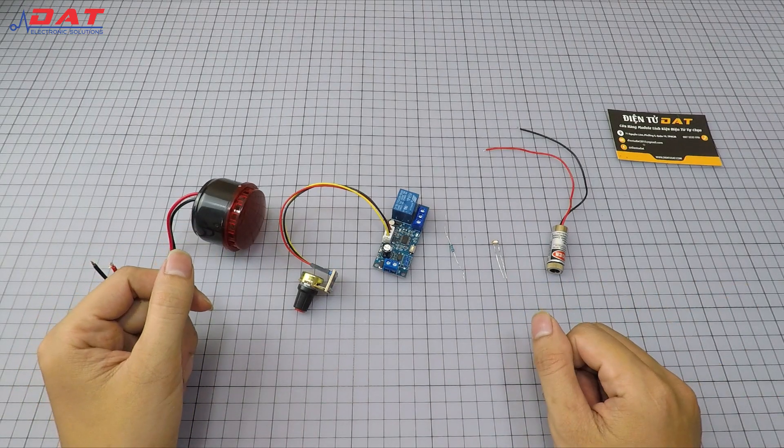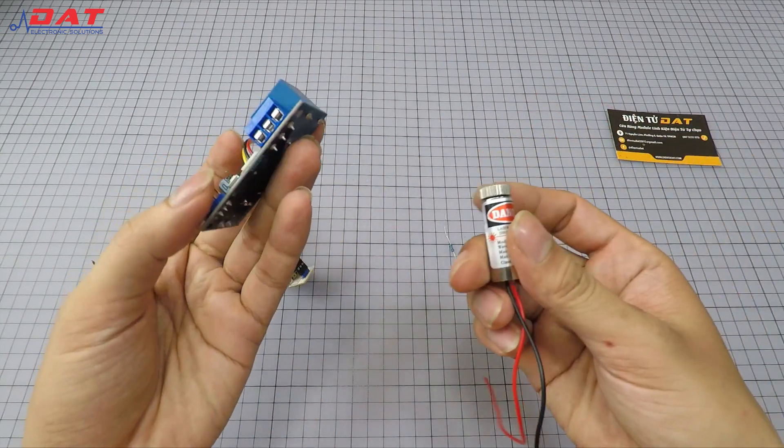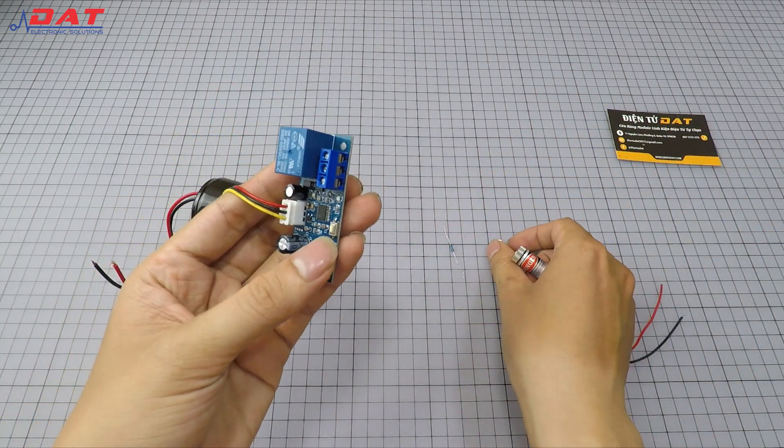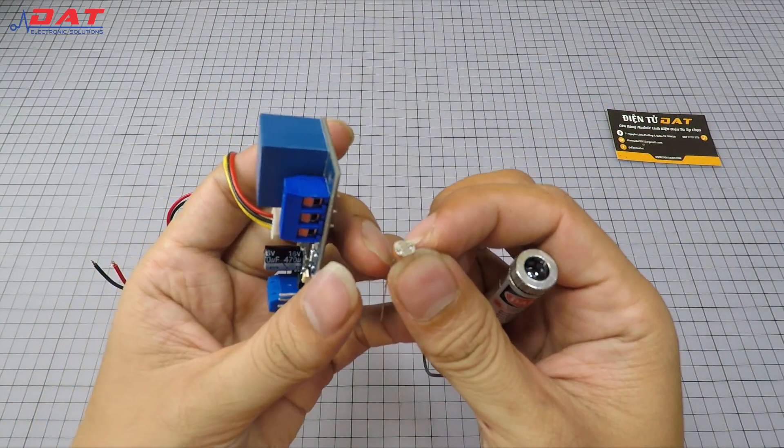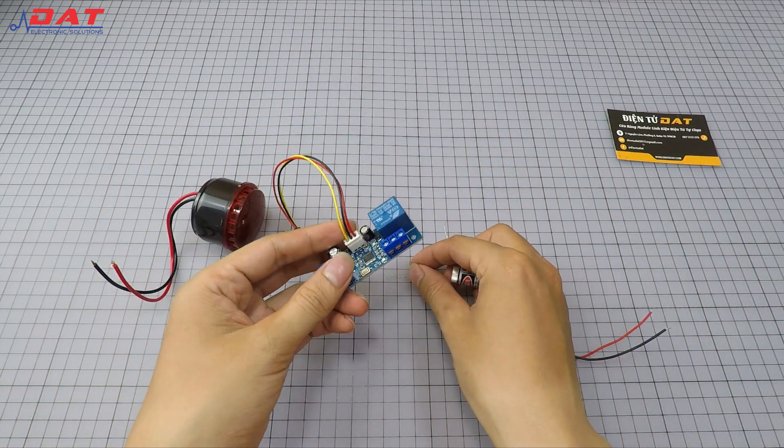Welcome back to điện tử DT. I'm going to show you how to make an anti-theft alarm using a laser by combining a photoresistor and VKT-102 circuit module along with other components. It's very simple but effective.